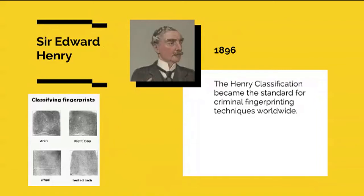Sir Edward Henry, Commissioner of Metropolitan Police of London, developed his own system in 1896 based on the direction, flow, pattern, and other characteristics in fingerprints. The Henry classification system became the standard for criminal fingerprinting techniques worldwide.